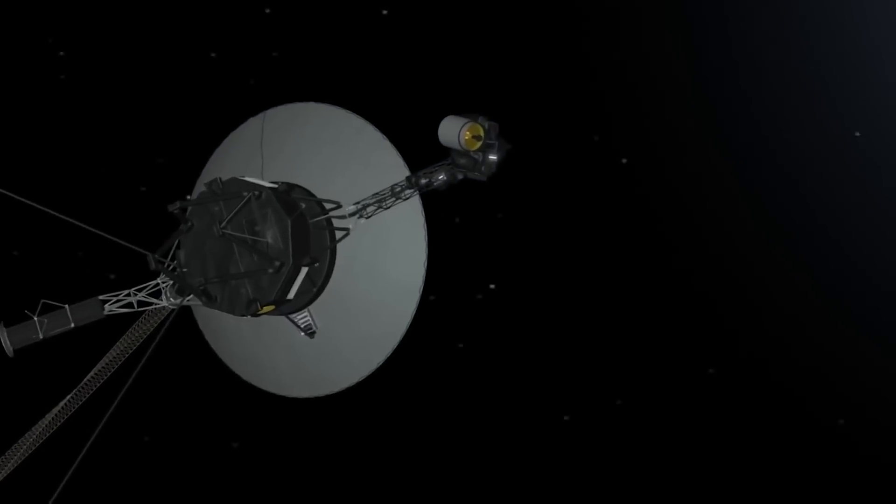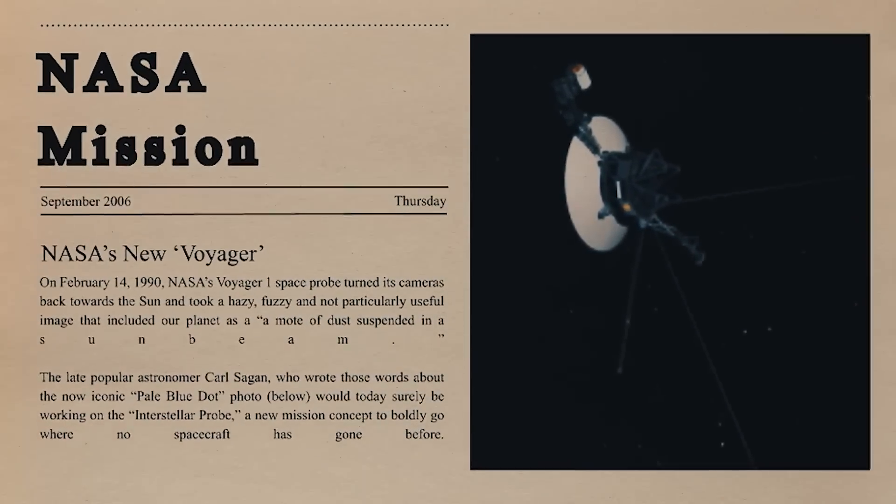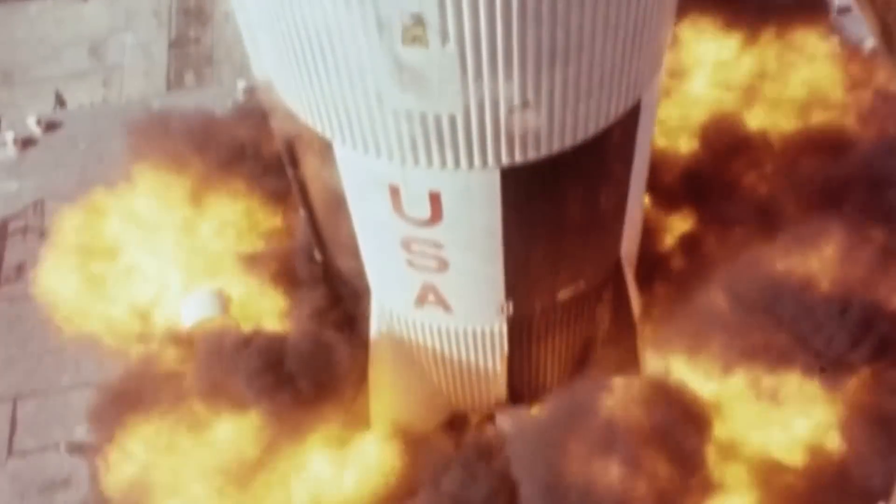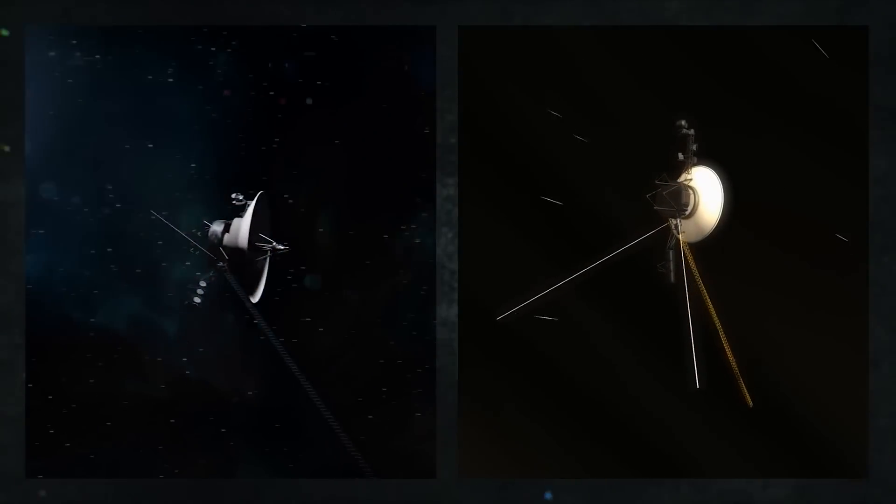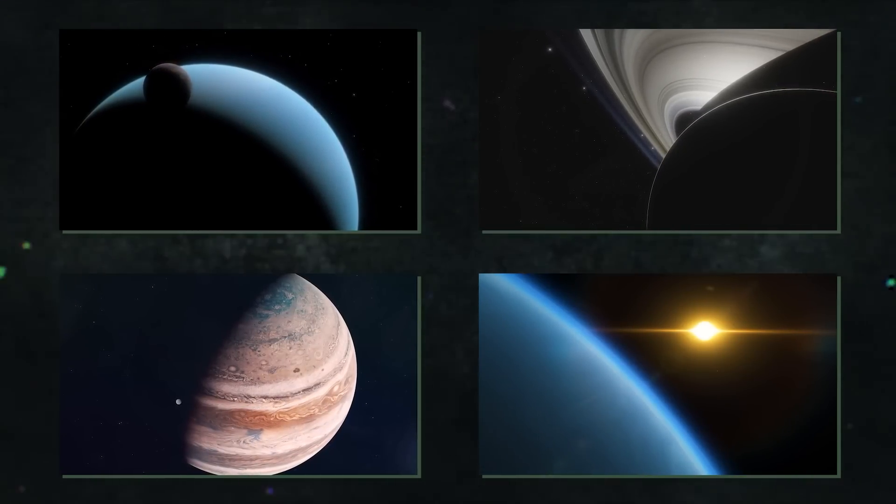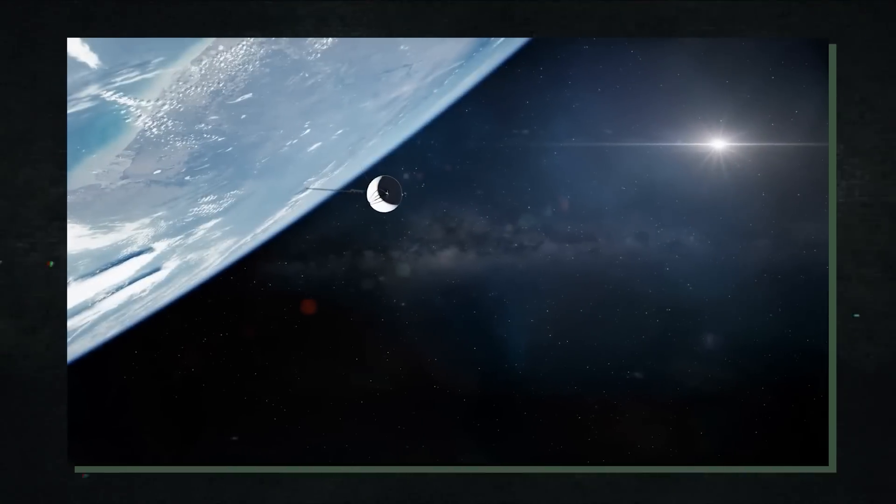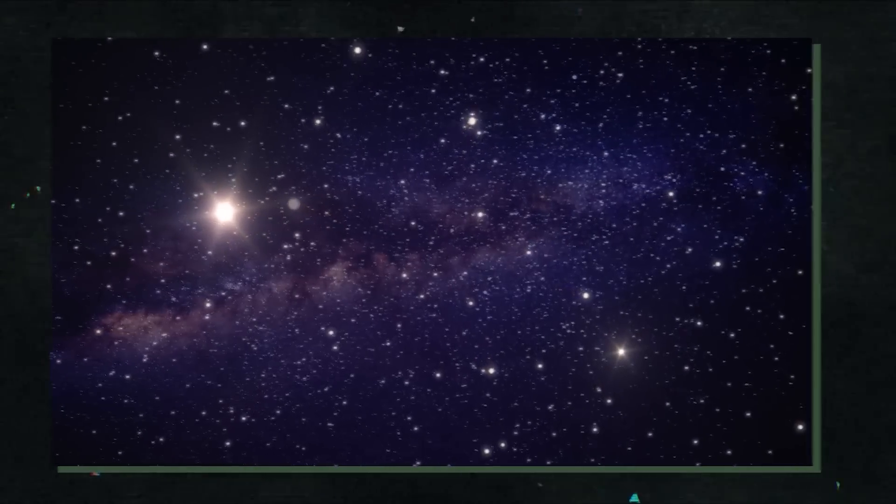It's crucial to first comprehend what Voyager 2 is and what its purpose has been before delving into the mysterious power that it has uncovered. NASA launched the sibling spacecraft Voyager 1 and Voyager 2 around the same time in 1977. Exploring the outer planets of our solar system, such as Jupiter, Saturn, Uranus, and Neptune, was Voyager 2's main objective. Voyager 2 became the second artificial object after Voyager 1 to continue its voyage into interstellar space after completing its initial mission.